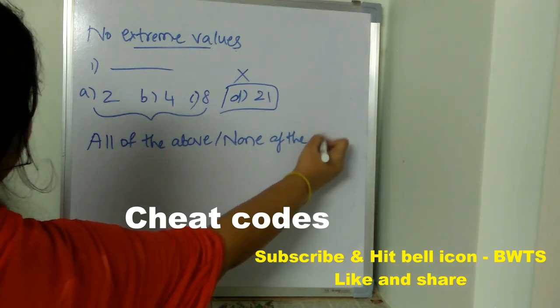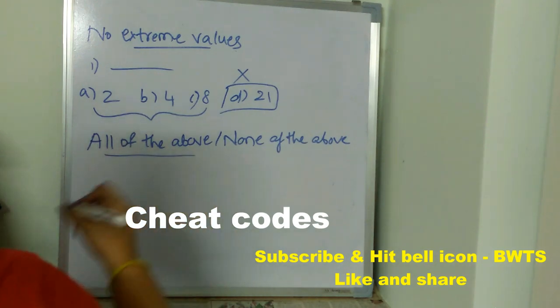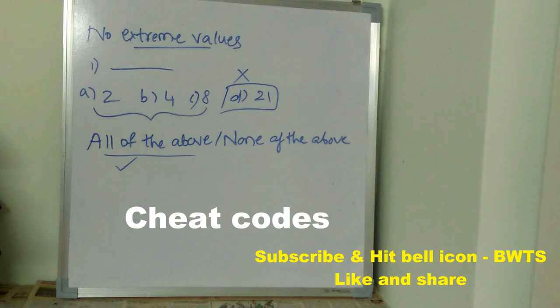Next is all of the above and none of the above. When you have all of the above as one of the option and you don't know what is the correct answer, there are high chances that all of the above is the correct answer. Then you can happily go for it.